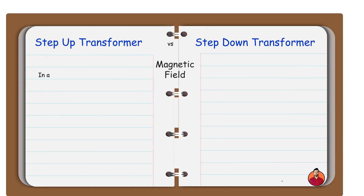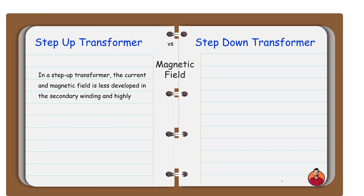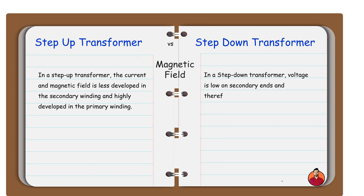In step up transformer the current and magnetic field is less developed in the secondary winding and highly developed in the primary winding. In a step down transformer voltage is low on secondary ends and therefore the current and magnetic field is high.